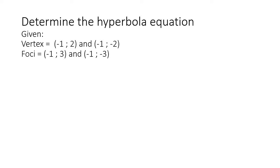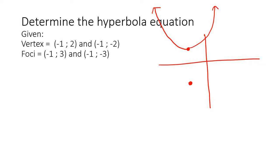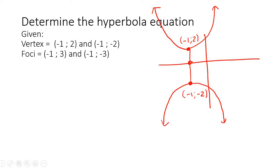Here's our next example. The vertex is at (−1, 2) and (−1, −2), so this is a vertical hyperbola. The center is directly in the middle — so at (−1, 0). That means h is −1 and k is 0.